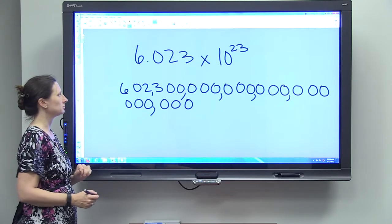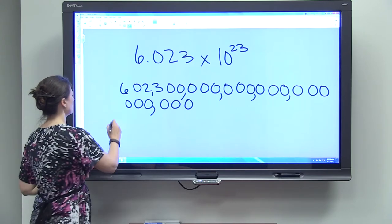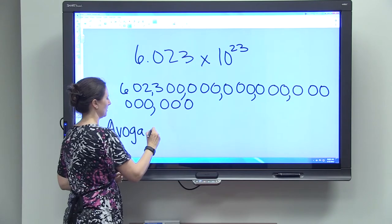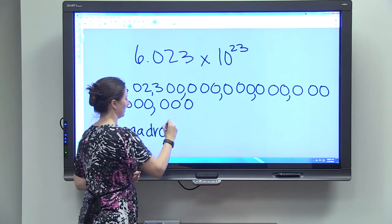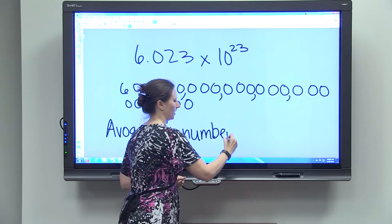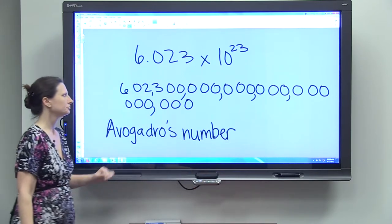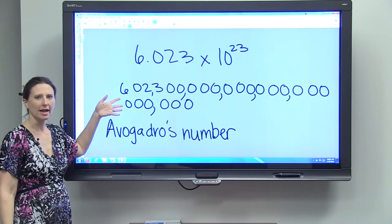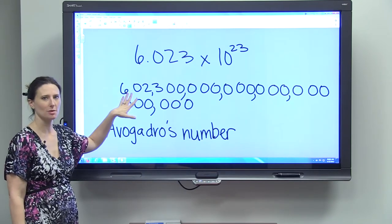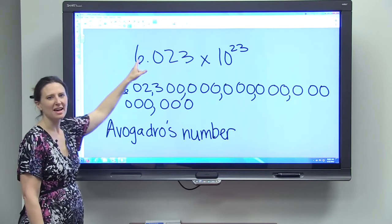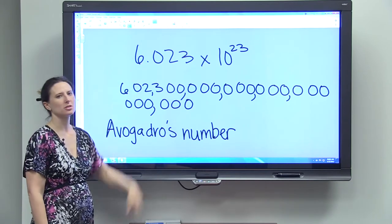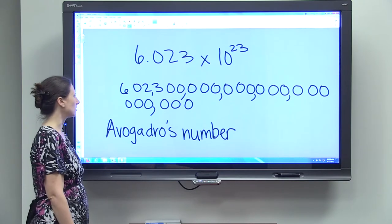That number is called Avogadro's number, and it's written here in two different ways. It's written in the longhand version, which is really, really long and a very large number. So we've converted that using scientific notation to 6.023 times 10 to the 23rd.